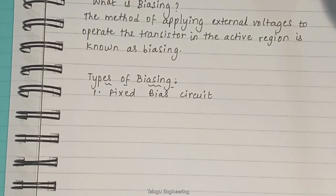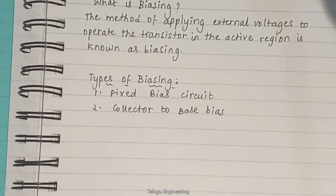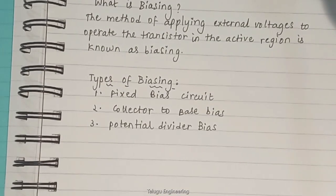Now going down to the next one we have collector to base bias. In this, CE amplifier is biased by connecting the resistance RB across the collector and base terminals. Now moving on to the third one, we have potential divider bias. Potential divider bias or voltage divider bias or self bias. Now we are going to discuss about this one.